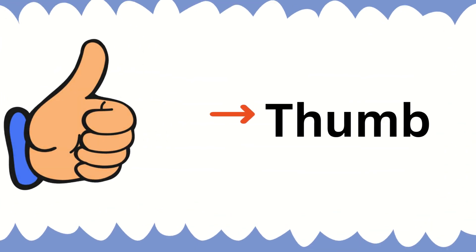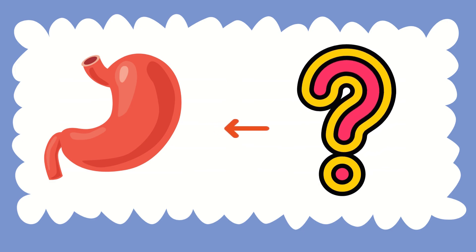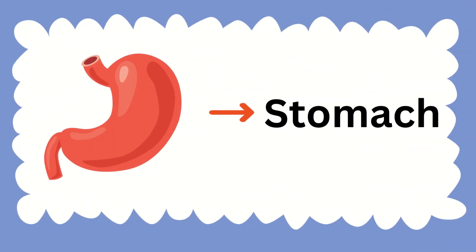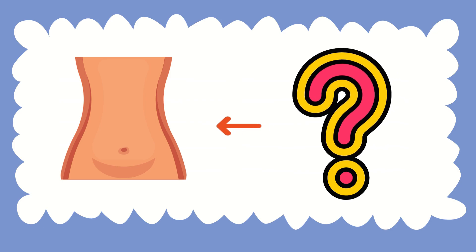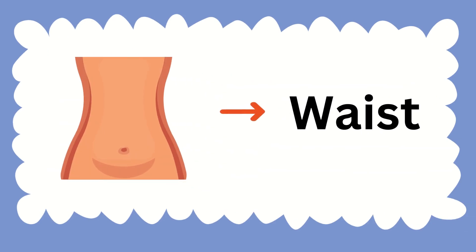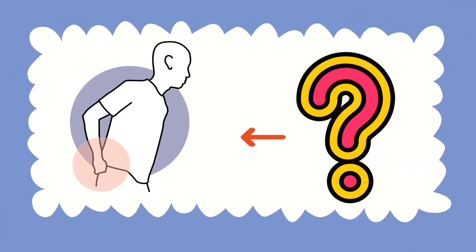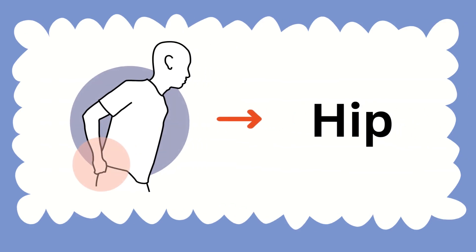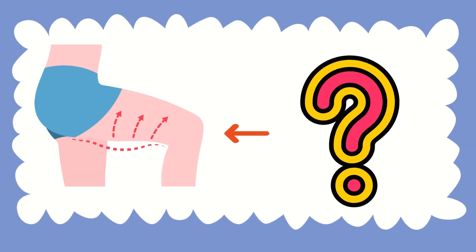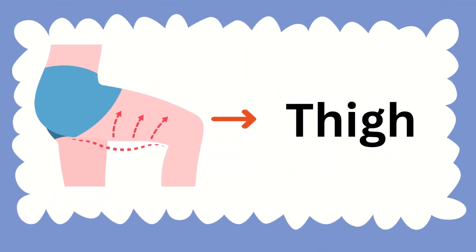Can you name this internal organ? It is called stomach. What about this? This is called waist. Look at this picture carefully and tell me the name — this is called hip. What about this part of our body? This is called thigh.